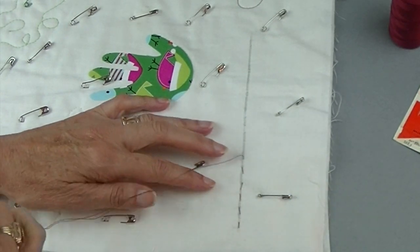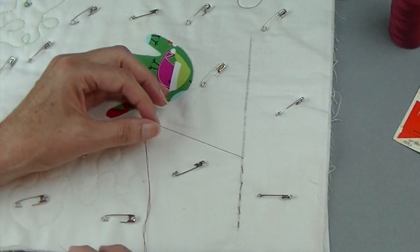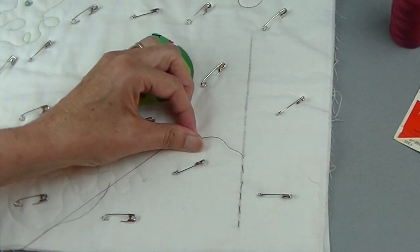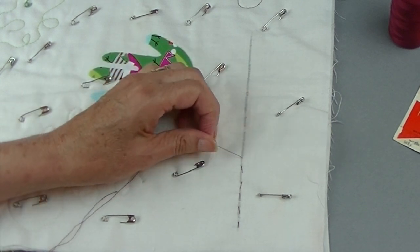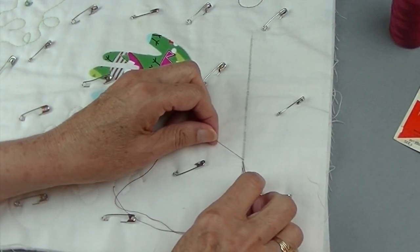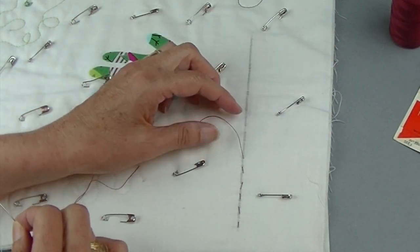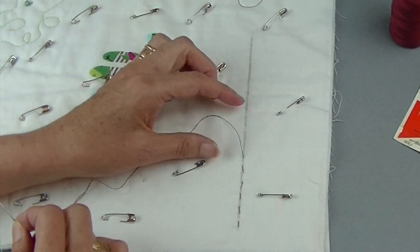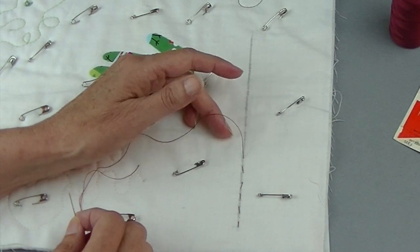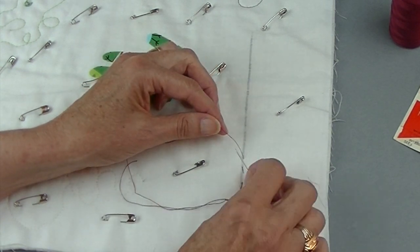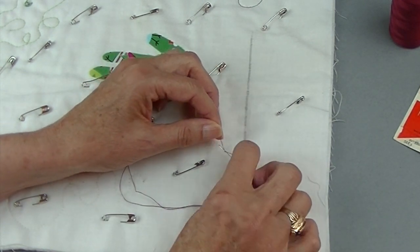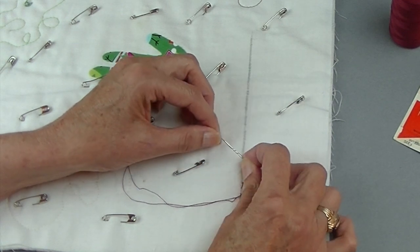And now I want to hide my knot when I end. So we're going to do the same thing. Say that we want to end right here. I've got a lot of thread. Normally when you're ready to end stitching, you're only going to have a little bit of thread. So you want to have a little extra so you can maneuver because you need to wrap the thread around your needle.